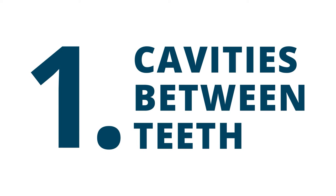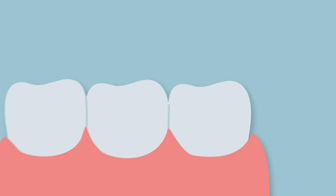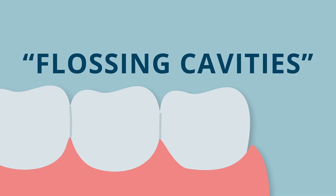Cavities between teeth. Many cavities develop between teeth. These flossing cavities begin on the side of the tooth and work their way inward, only becoming visible to the eye once significant tooth enamel has been destroyed.